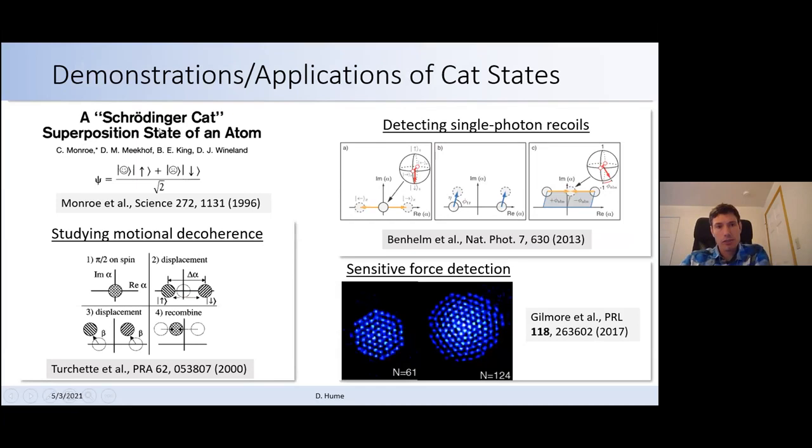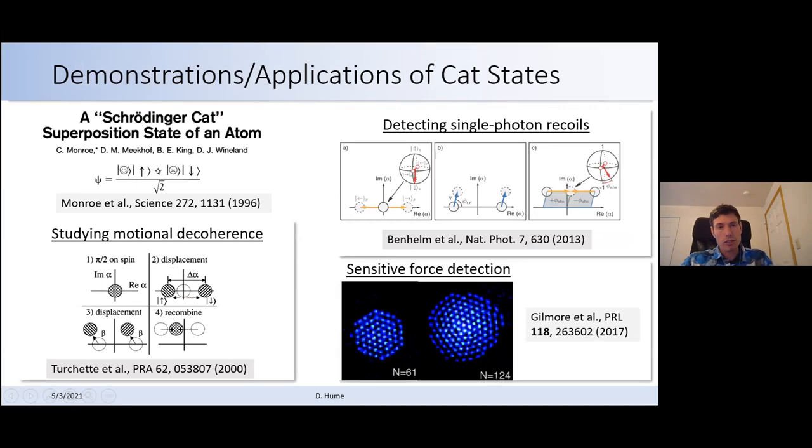So this has been applied to a number of different things over the years. It was first demonstrated in our group just showing this so-called Schrödinger cat superposition state of the atom and using it to study motional decoherence. The same idea has been used for detecting single photon recoils. And it's been applied to very sensitive force detection in ion crystals of up to hundreds of ions in a Penning trap. And this is really the idea that inspired this work that we've done now trying to scale up quantum logic spectroscopy. This is a case where the idea is clearly scalable.